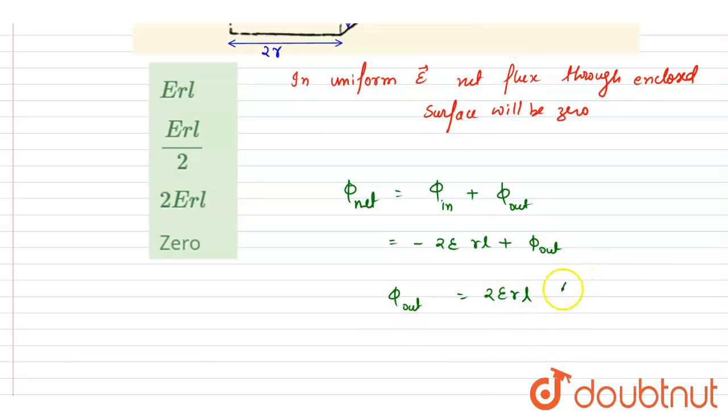And this will be the answer of this question. Through the curve part it will be having the same magnitude but in opposite direction, it will be outward flux. Now you can check, option C is the correct one. Thank you.